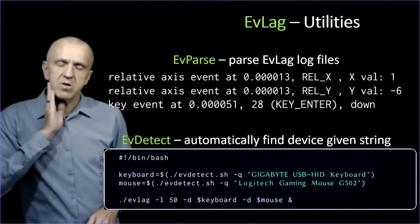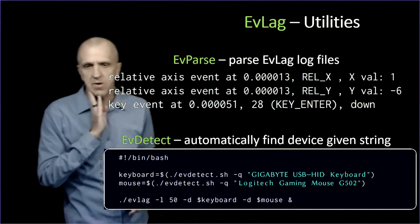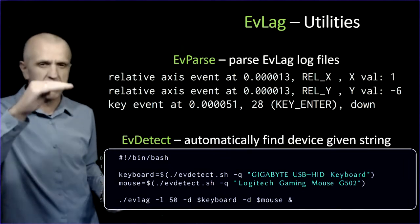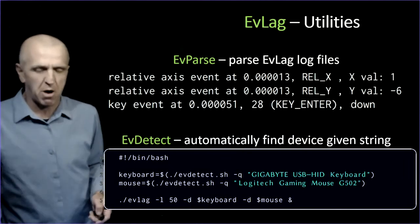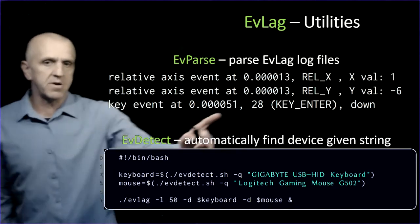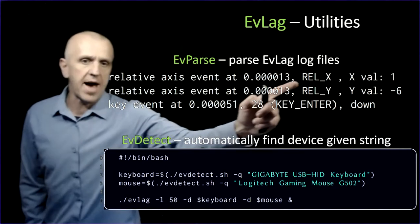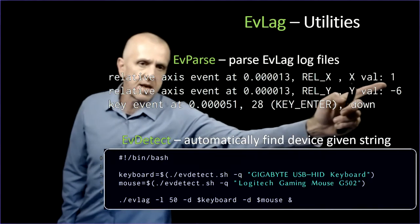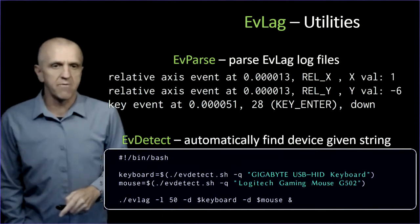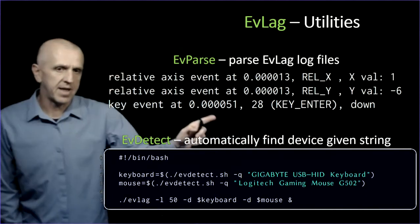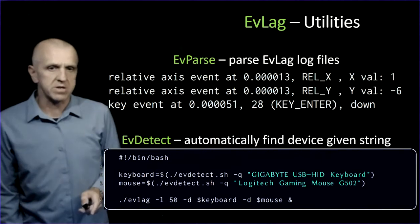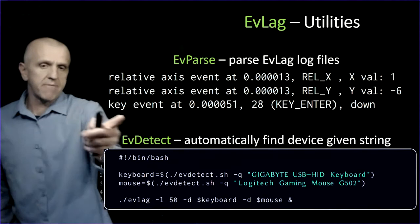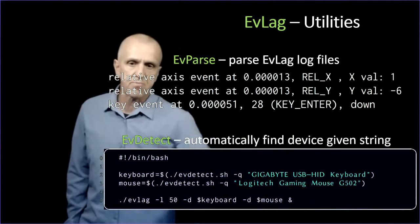EvLag comes with some utilities that can be useful for doing experiments or analysis. EvParse takes the log files, which are character-level input codes, and parses them into something more readable. Two examples here. It gives you the time of these two actions. This is a mouse event, the X moved one pixel over horizontally, and the Y moved up minus six pixels. You can process that, get mouse movements. This is another event, a keyboard event, the Enter key is pressed down.